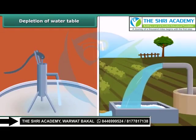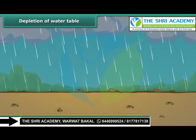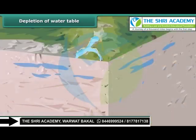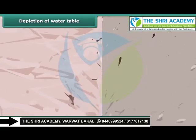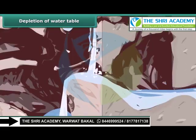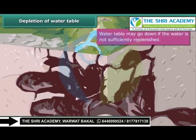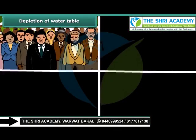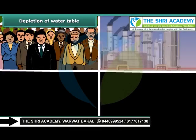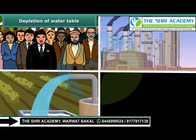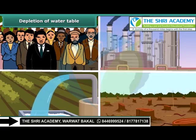Water drawn from the ground water gets replenished by seepage of rain water. The water table does not get affected as long as we draw as much water as is replenished by natural processes. However, water table may go down if the water is not sufficiently replenished. This may happen due to many factors such as increasing population, rapid growth of industries, agricultural activities, scanty rainfall and deforestation.